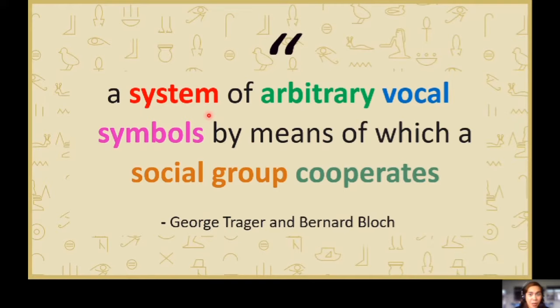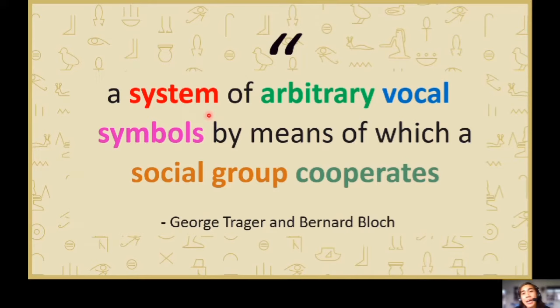Next is arbitrary. When we talk about arbitrary, its opposite is iconic. Arbitrary is something that is not really related to what we call the object. Like, for example, a chair — how were we able to call this a chair? Does it have the word 'chair' written on it? There's none. That's why there's no relationship between what we call that object and its actual appearance. So that is arbitrary — no relationship. It just came up like that.